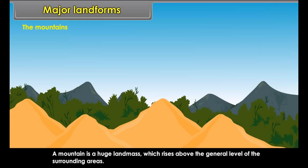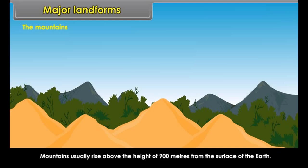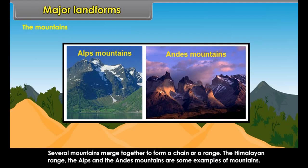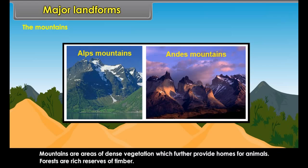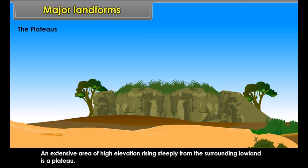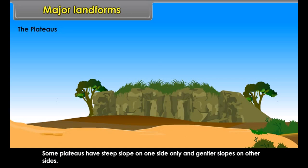Major landforms. The land mass has different types of landforms. These are generally grouped into mountains, plateaus, and plains. A mountain is a huge land mass which rises above the general level of the surrounding areas, usually above 900 meters from the surface of the earth. Several mountains merge together to form a chain or a range. The Himalayan Range, the Alps, and the Andes Mountains are some examples. Mountains are areas of dense vegetation which provide homes for animals. Forests are rich reserves of timber.